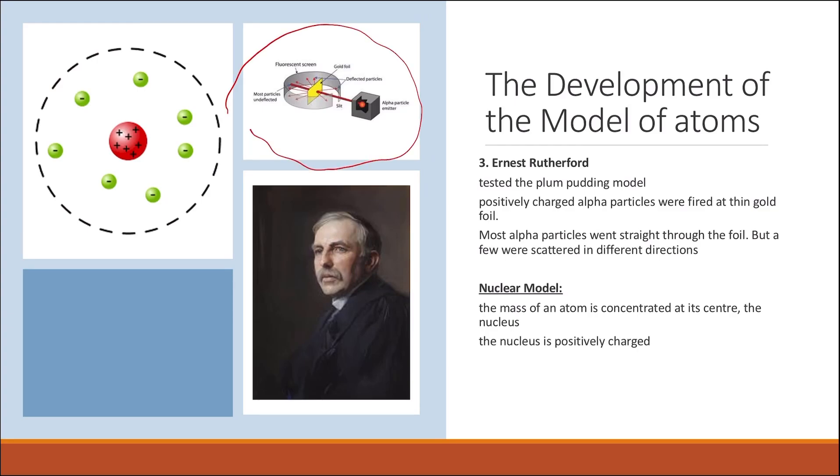And what he noticed is that most of the alpha particles, the positively charged particles, actually went straight through the foil. So they were not reflected, or all of them were not scattered, as he supposed would happen if the Plum Pudding model was correct.